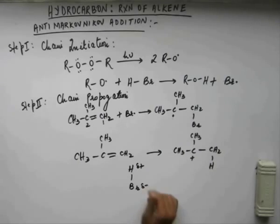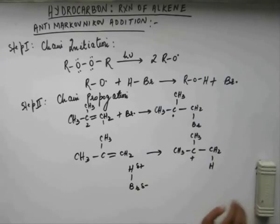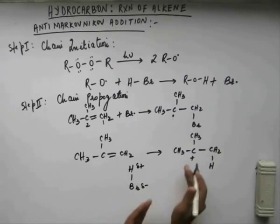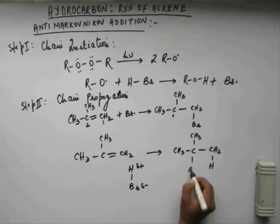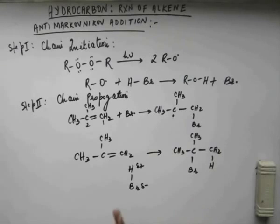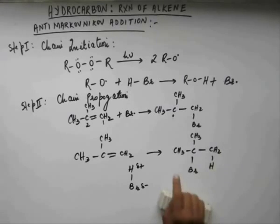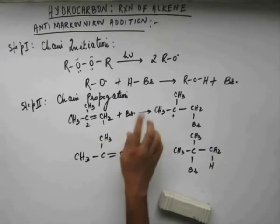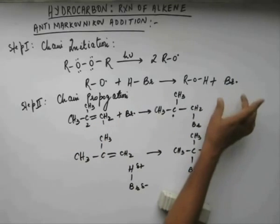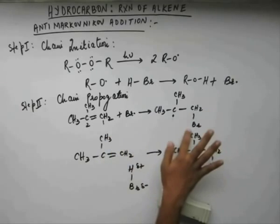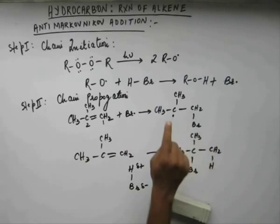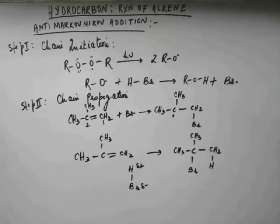The difference only arises because Br· comes for the reaction first in the radical case, while hydrogen comes for the reaction first in the ionic case. In the next step of the ionic mechanism, Br⁻ comes and reacts with the carbocation (C+), giving Markovnikov addition with bromine on the internal carbon. In the radical mechanism, Br· generated in the chain initiation step comes and reacts with the alkene, attaches to the outer carbon, and a free radical is generated on the internal carbon.